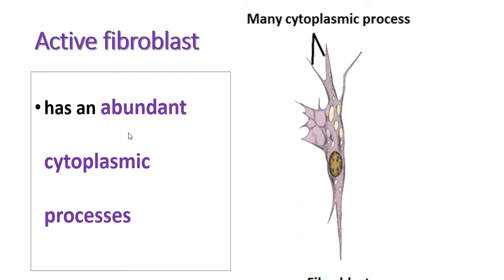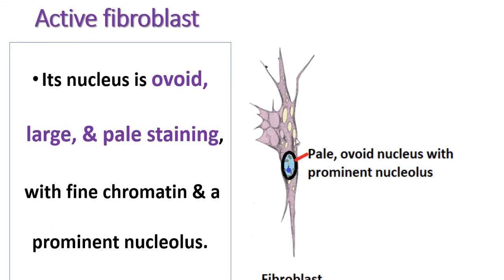The active fibroblast has abundant cytoplasmic processes, and its nucleus is oval and pale-staining because it contains more active DNA and a prominent nucleolus. It is rich in euchromatin, which is unable to stain with H&E staining, so it appears pale.